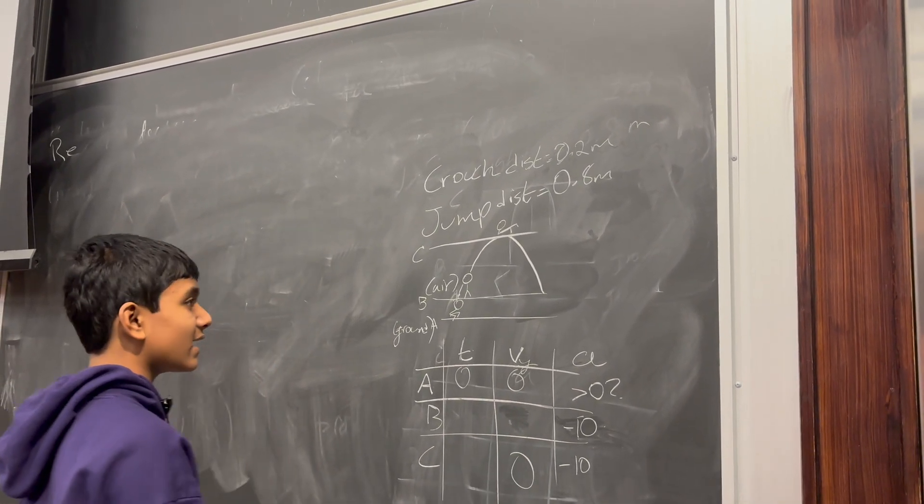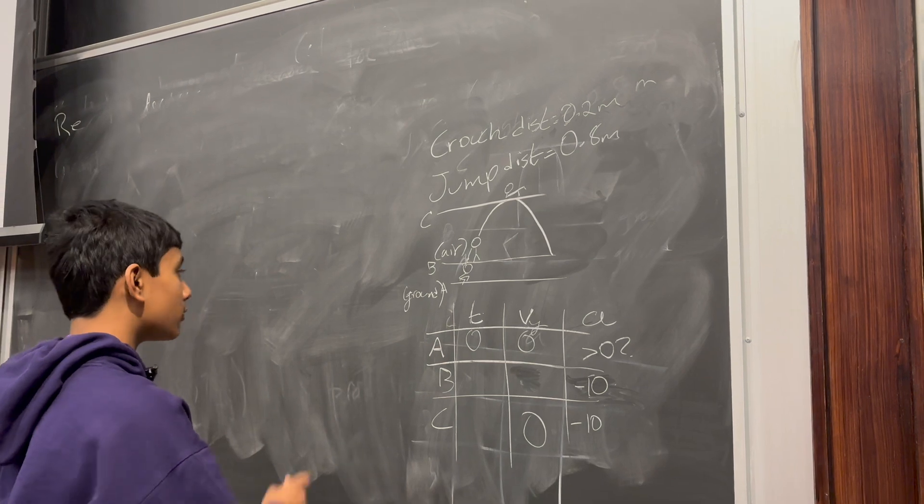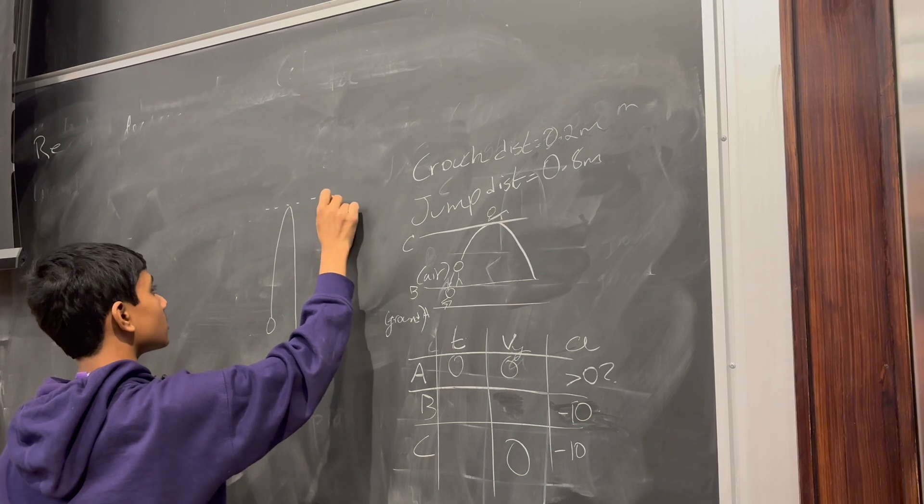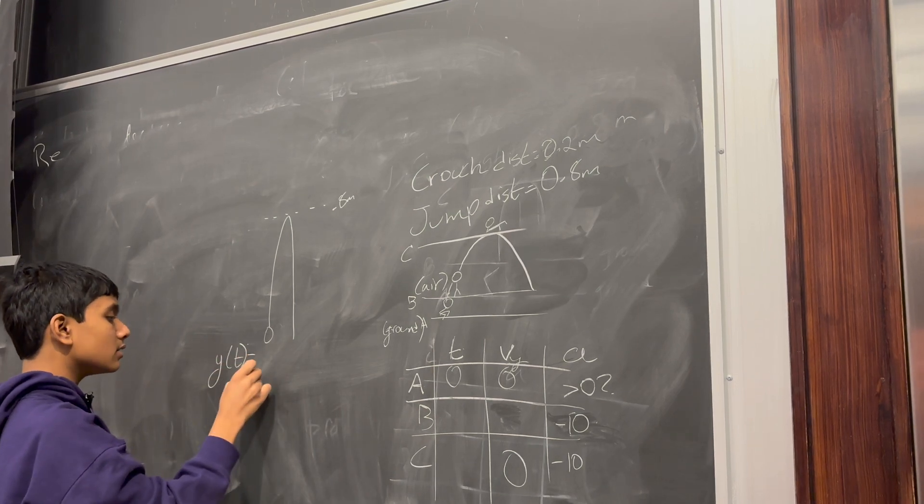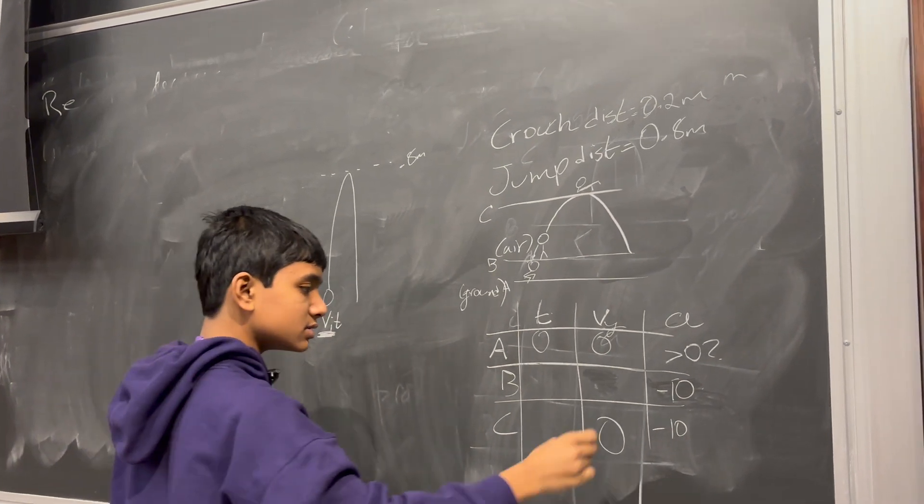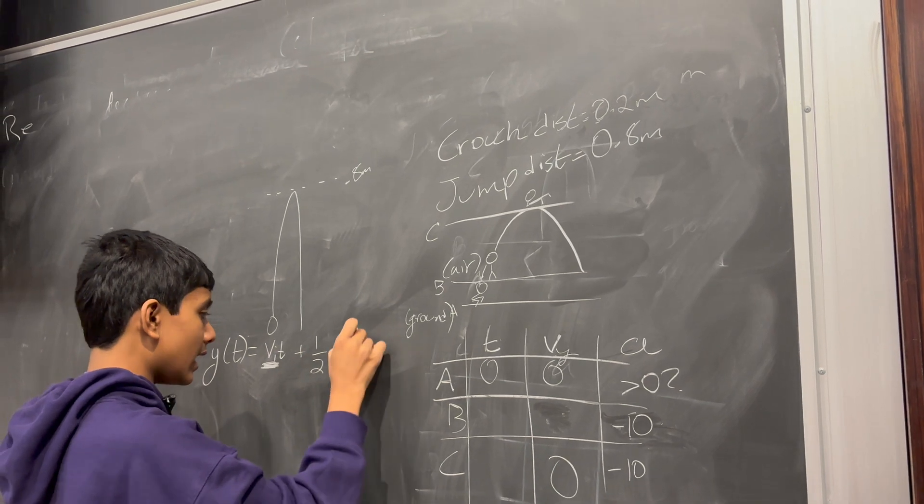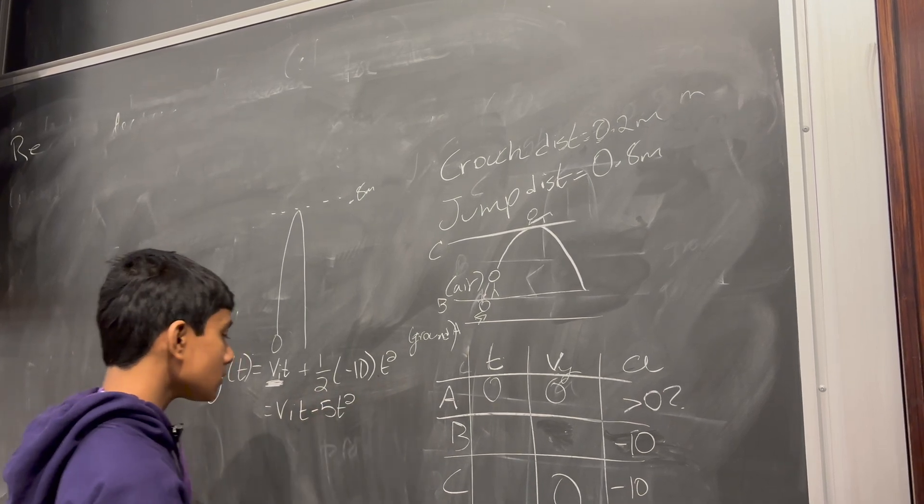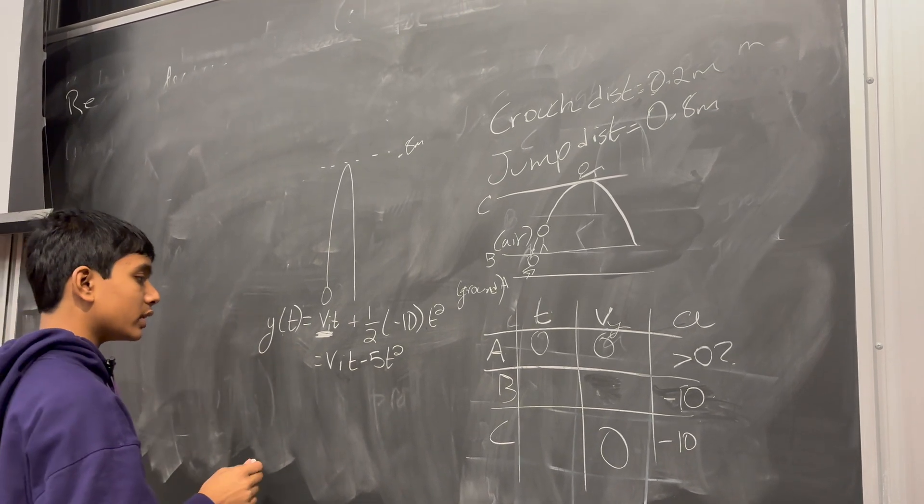Now, how do we figure that out? Well, we treat him like a projectile that just went up and down and reached the maximum height of 0.8 meters. What's the distance over time function of this projectile? Well, it's Vi*t, Vi being the thing that we're trying to find, plus half A, which is of course negative 10, t squared.